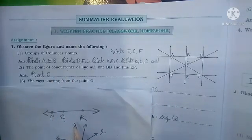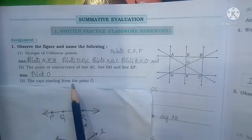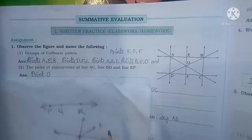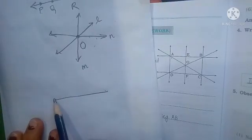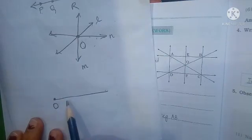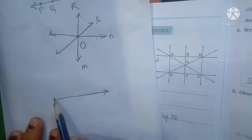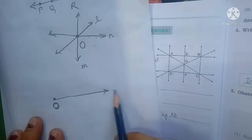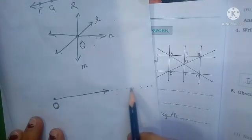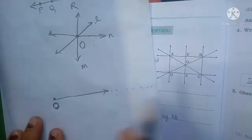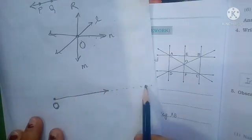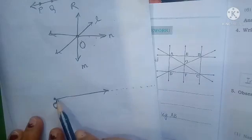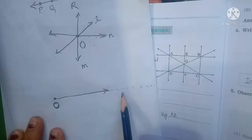Now moving ahead with the third question: they are asking for the rays starting from point O. What do you mean by a ray? A ray is nothing but a part of a line. Starting from point O and moving ahead, a ray starts from a fixed point and moves in a straight line indefinitely — it has no limit in one direction. It moves in the same direction without end. This is known as your ray.